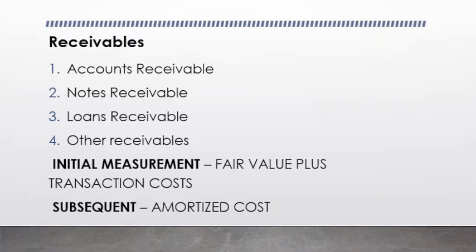Other receivables include interest receivable, due from employees, officers, and other NGAs, lease receivables, dividend receivable, and the like. These classifications can be found in the GAM for National Government Agencies Volume 3, which identifies when these accounts receivable are to be used.